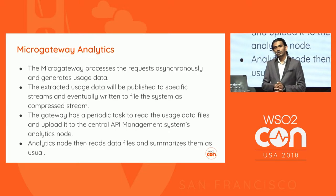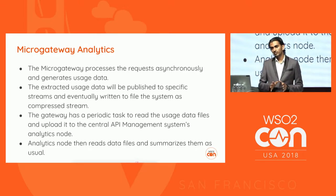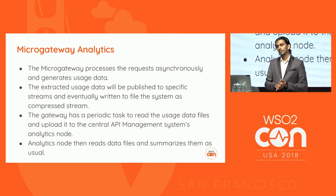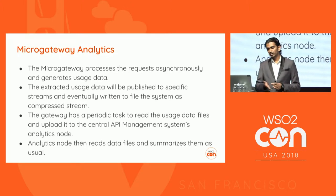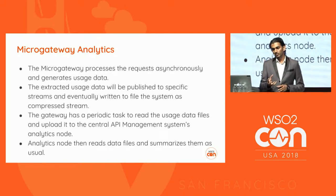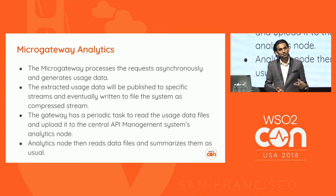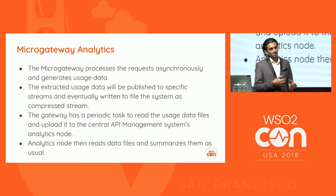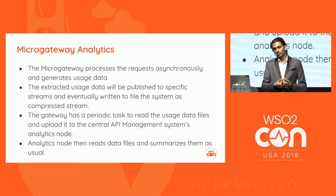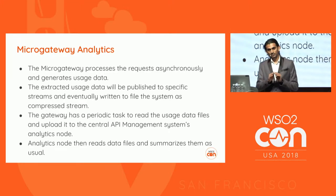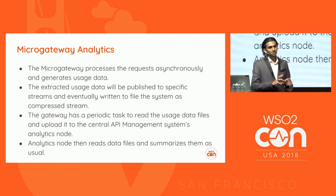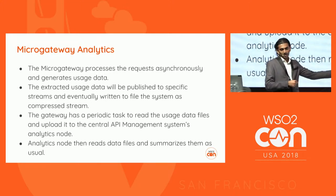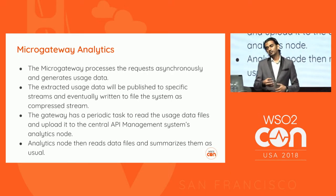Micro-gateway analytics works differently from regular API analytics. When a request comes to micro-gateway, it extracts metadata from the incoming message and creates a JSON payload. Instead of publishing usage data directly to the analytics server, it writes to the file system. When file size exceeds 2MB, the files are rotated. Periodically, the files are zipped as a file stream and pushed to the analytics server. With this model, you don't need a constant internet connection — data is collected locally and pushed when connectivity is available.